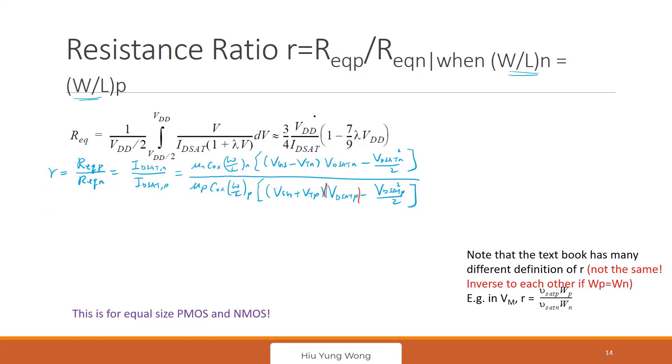But if they're different size, we cannot use this, right? We have to use something else. If they're different size, then it's not called R. You can still use this one, but we don't call it R. You can say the ratio of different size.